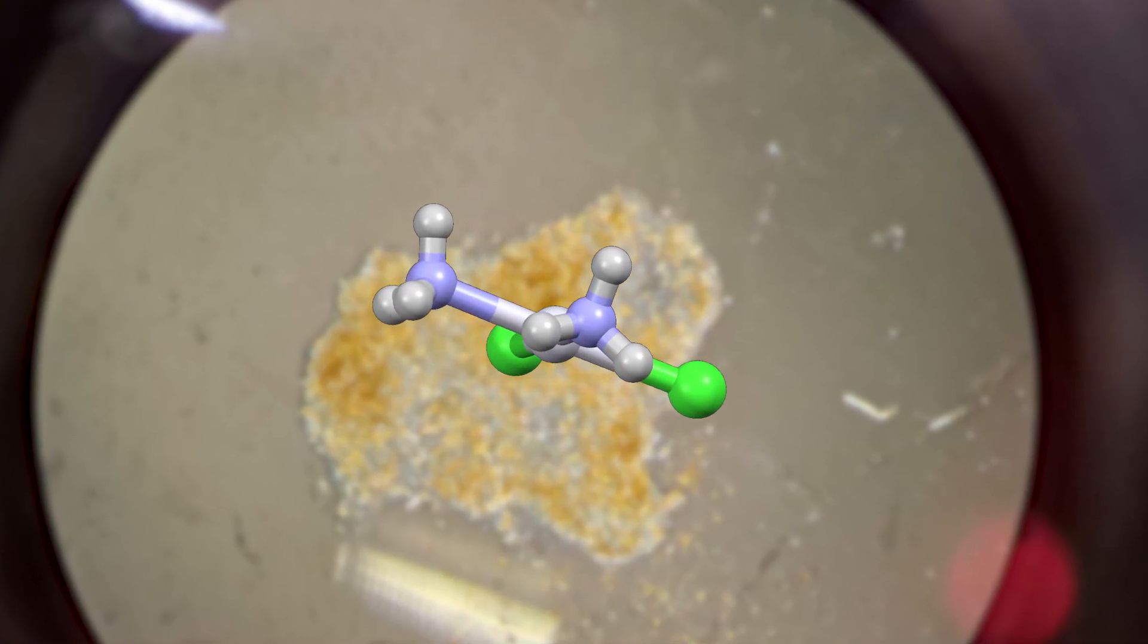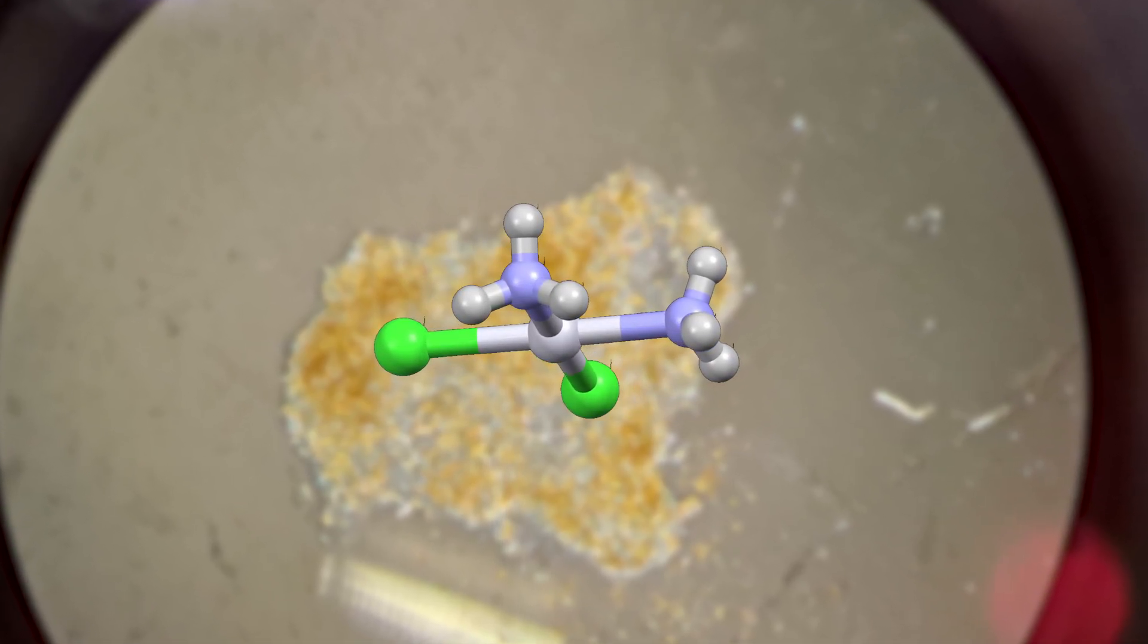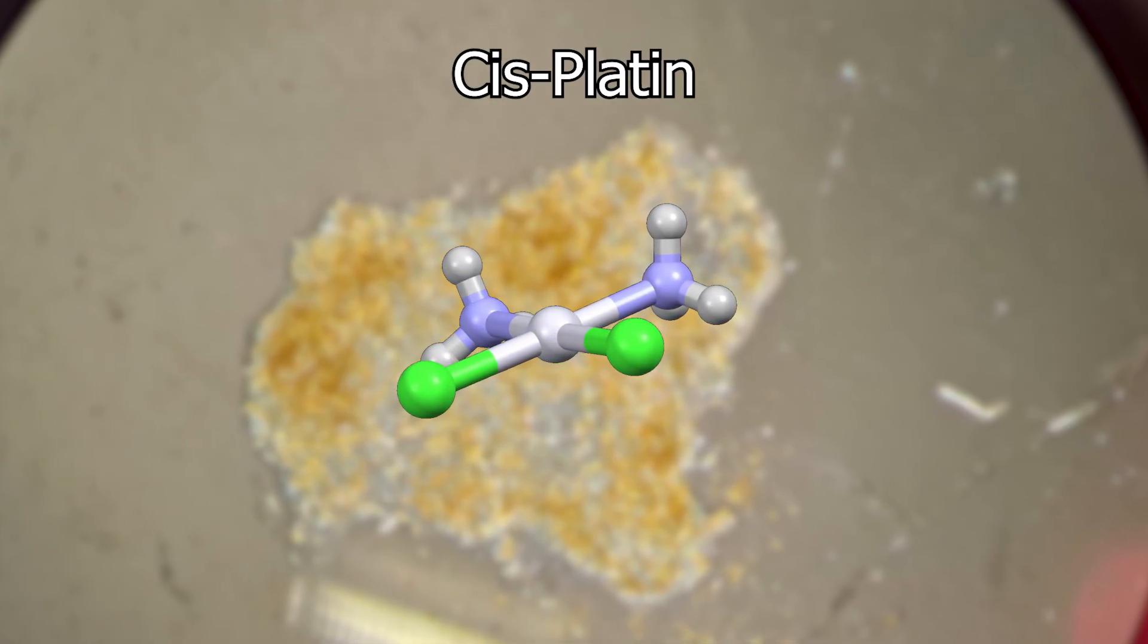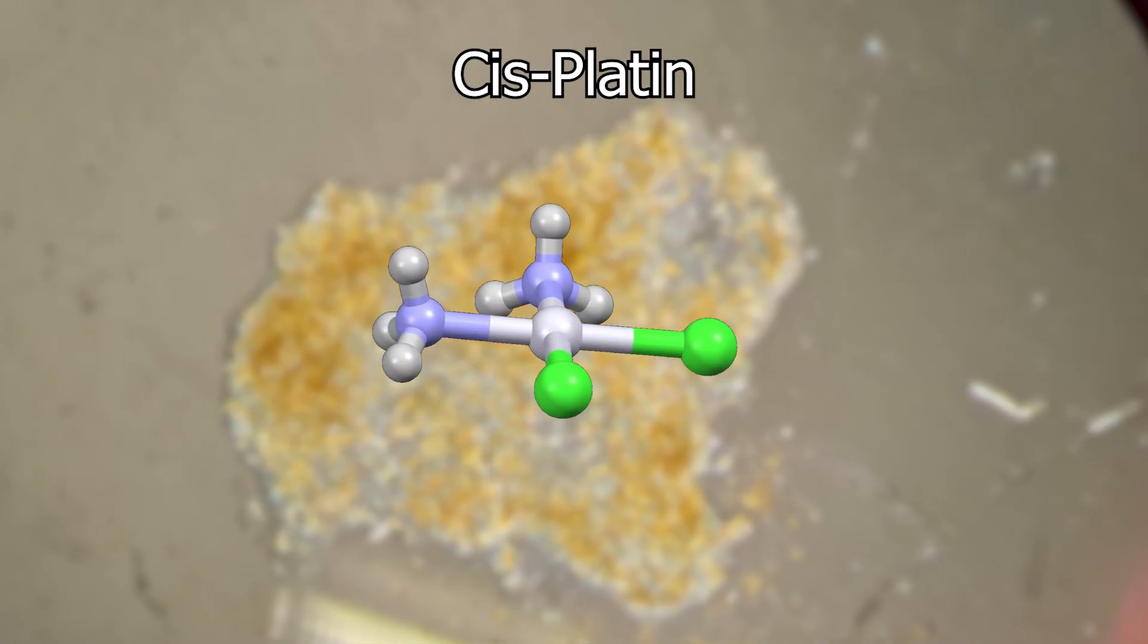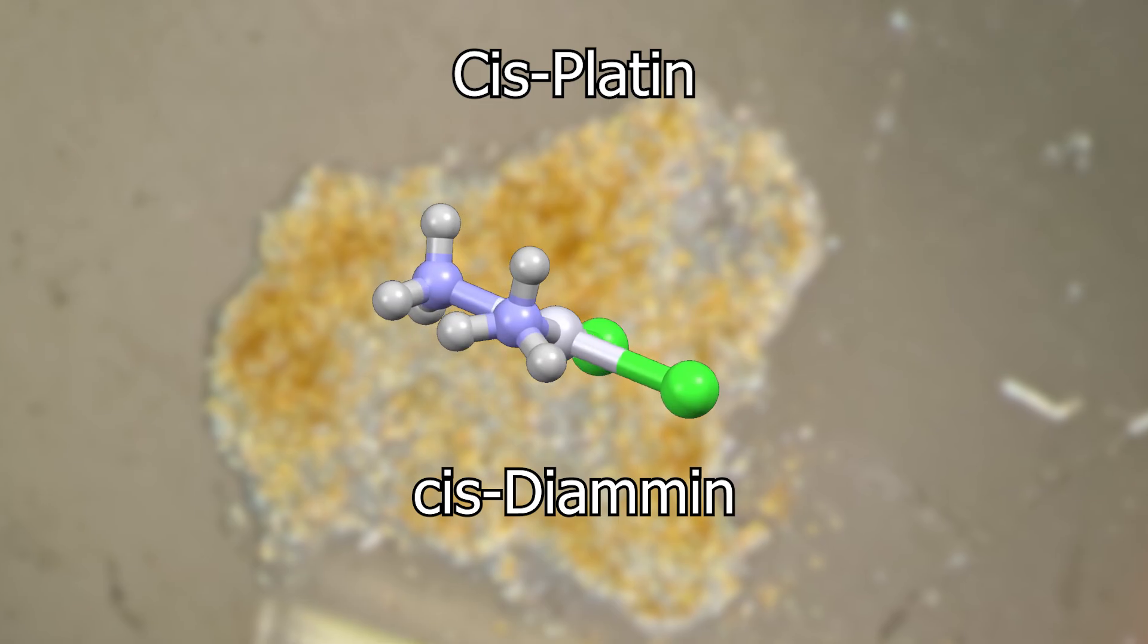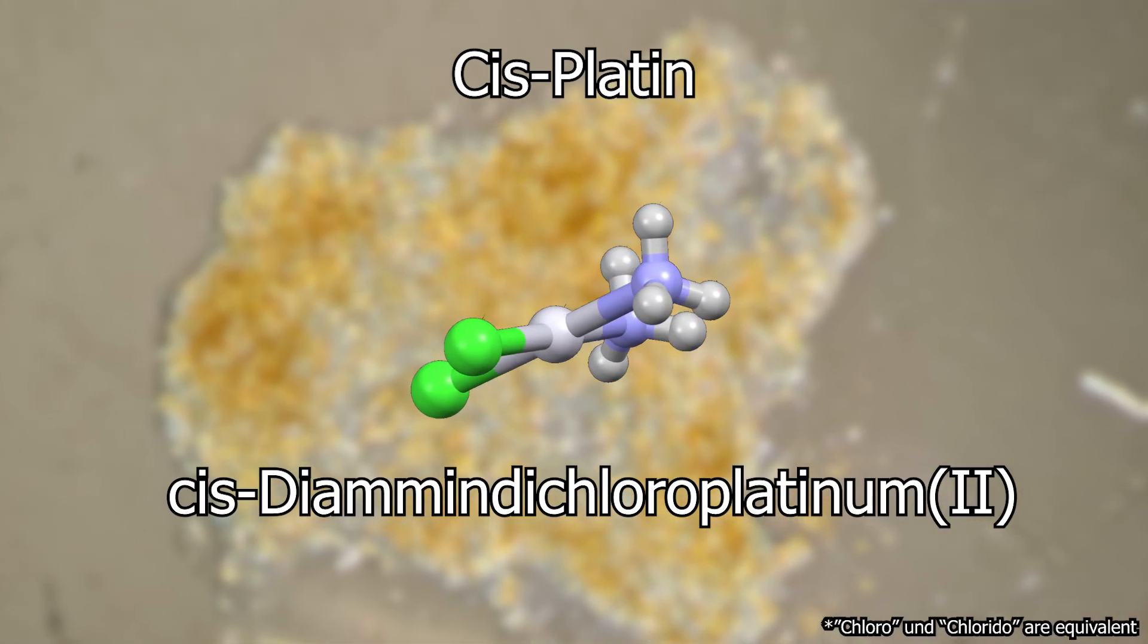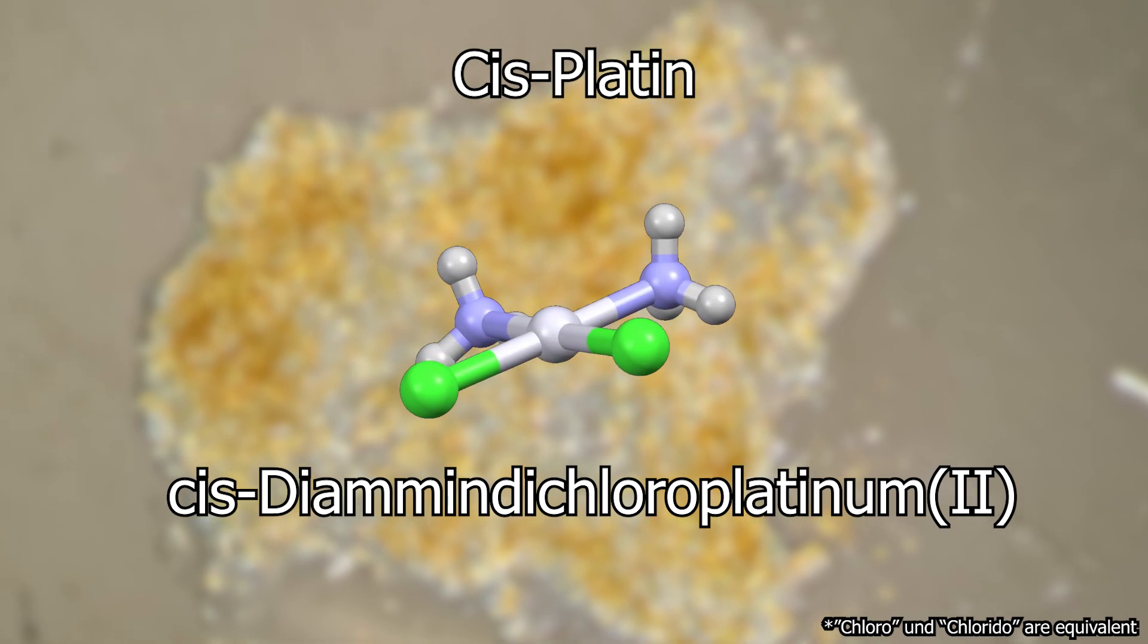Today, I'll show you how to make a platinum-containing cancer medication. Let's start with the simplest compound named cisplatin. Cisplatin, or by its full IUPAC name, cis-diamine dichloroplatinum(II), is quite interesting from both a chemical and a medical perspective. But we can talk about that after the synthesis.